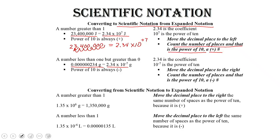You do the exact same thing. You always start where the decimal place is and you move it to a point where we have a coefficient that's between 1 and 10. So we count 1, 2, 3, 4, 5, 6, 7 spaces, and we get 2.34.